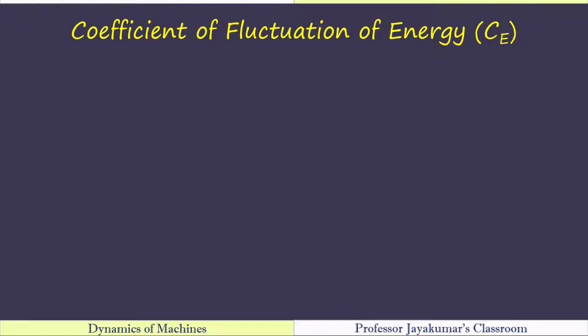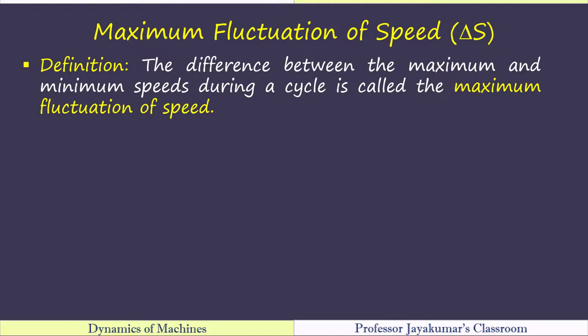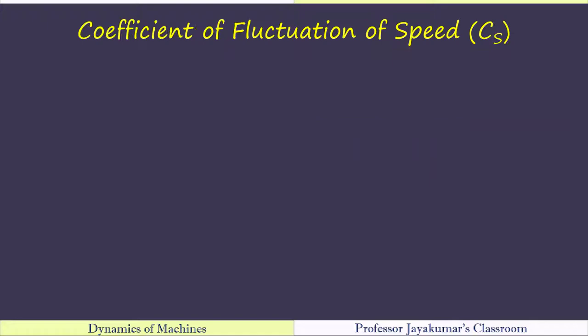There is one concept known as the coefficient of fluctuation of energy — it is the ratio between maximum fluctuation of energy delta E to the work done per cycle. When energy varies, obviously the speed varies. The maximum speed minus minimum speed is what we call maximum fluctuation of speed, delta S, similar to delta E. This term is very important in the design of a flywheel: the coefficient of fluctuation of speed, Cs.